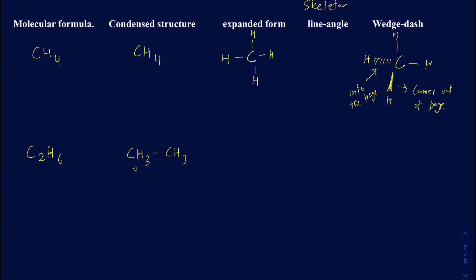The expanded form is going to have two carbons with hydrogens around them. Remember, you have to have four bonds total around the carbon. For the line angle structure of C2H6, it's not that common to write a skeleton form of two carbons, but if you do write it, it's just going to be a line.